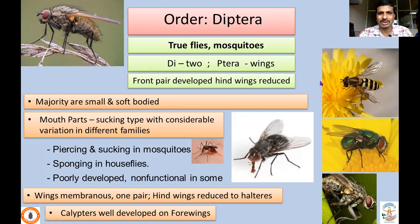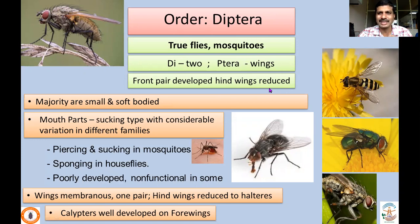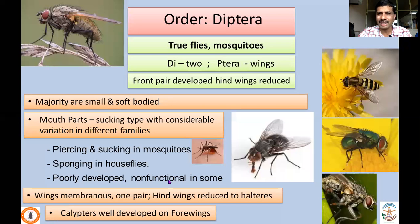Order Diptera are generally called true flies, which also includes mosquitoes. Etymologically, 'di' means two and 'ptera' means wings — in true flies, only one pair of wings, the front wings, is well developed, and the hind wings are reduced. Majority are small and soft-bodied insects. Mouthparts are generally sucking type but highly varied across families — piercing and sucking in mosquitoes, sponging in house flies, and vestigial or non-functional in some others.